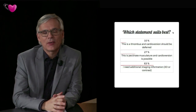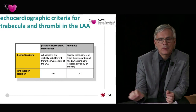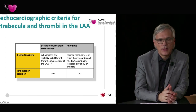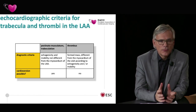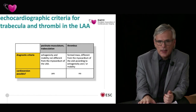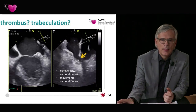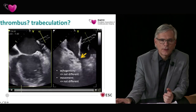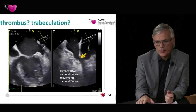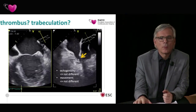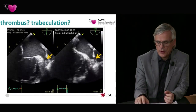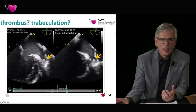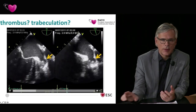Pectinate musculature is defined as having the same echogenicity and mobility as the surrounding left atrial appendage myocardium. A thrombus, by contrast, is a formed mass with different echogenicity and mobility. Returning to the case, the structure had the same echogenicity and moved in synchrony with the surrounding myocardium — consistent with trabeculation. For comparison, a true thrombus shows different movement and slightly lower echogenicity than the surrounding myocardium.